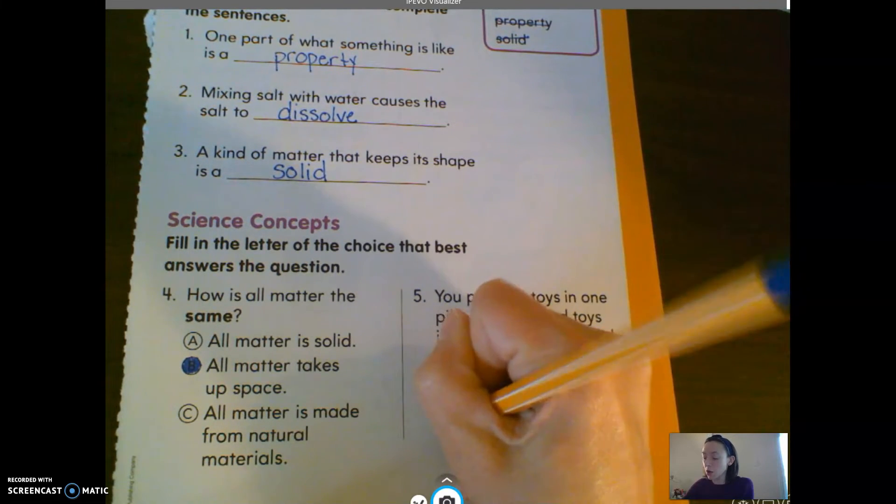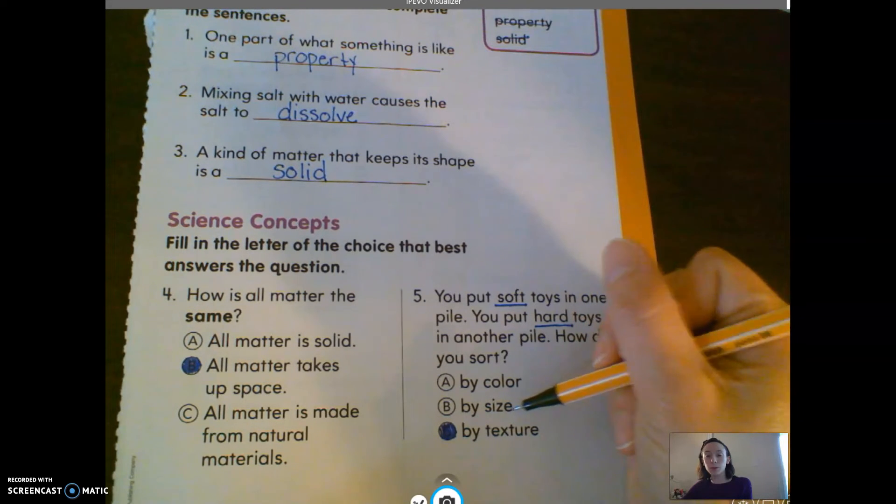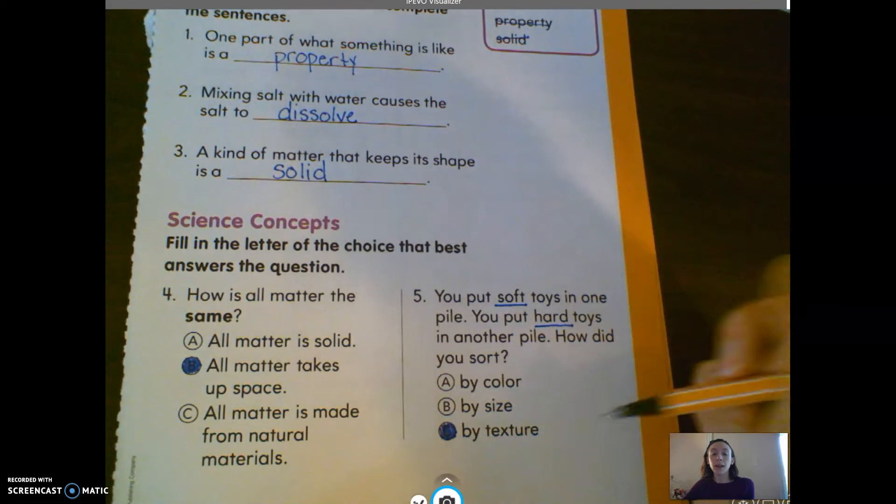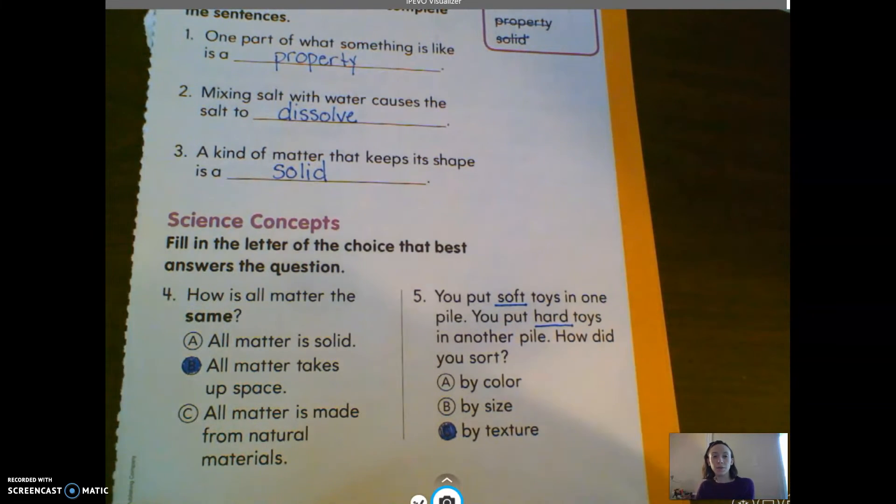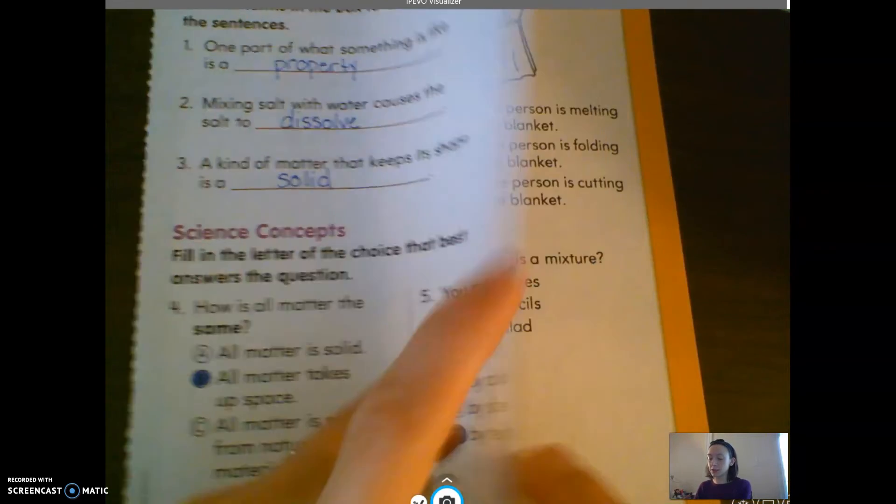It didn't say anything about red or green or blue or big or small. It has to be texture. Let's go to number six.